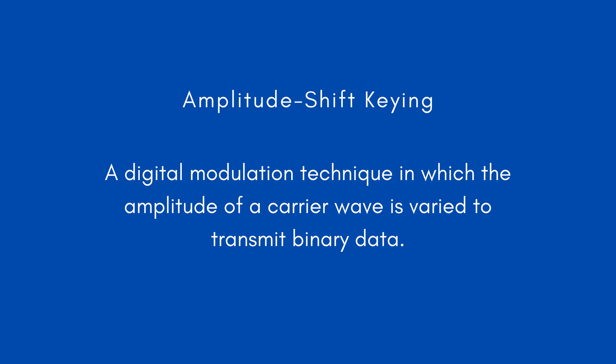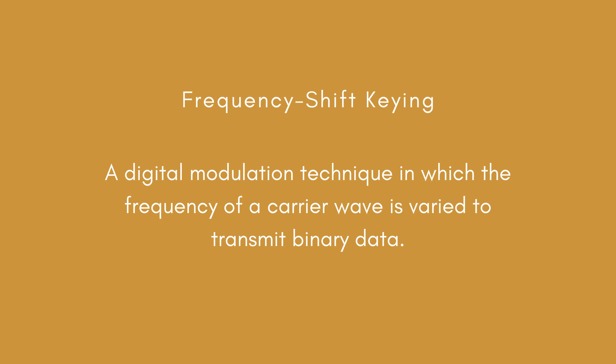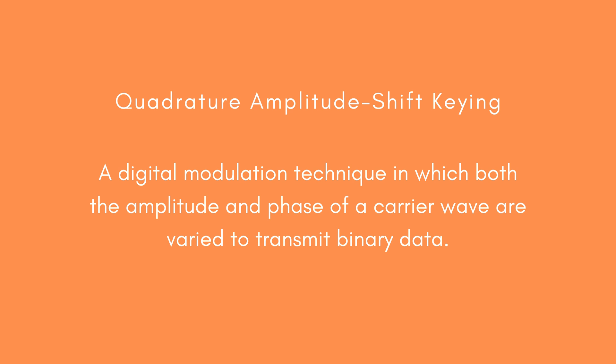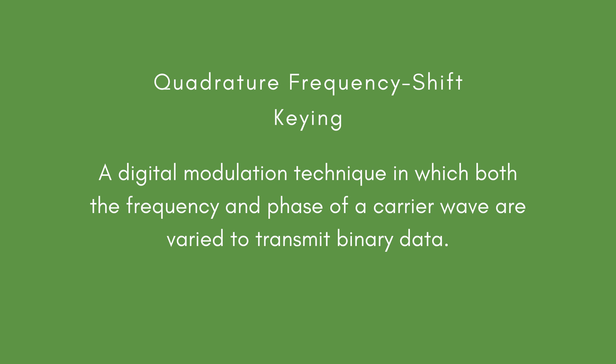Amplitude Shift Keying: a digital modulation technique in which the amplitude of a carrier wave is varied to transmit binary data. Phase Shift Keying: a digital modulation technique in which the phase of a carrier wave is varied to transmit binary data. Frequency Shift Keying: a digital modulation technique in which the frequency of a carrier wave is varied to transmit binary data. Quadrature Amplitude Shift Keying: a technique in which both the amplitude and phase of a carrier wave are varied. Quadrature Phase Shift Keying: a technique in which both the phase and amplitude are varied. Quadrature Frequency Shift Keying: a technique in which both the frequency and phase of a carrier wave are varied to transmit binary data.